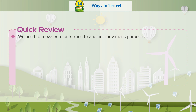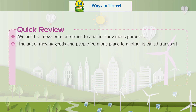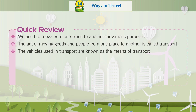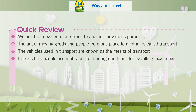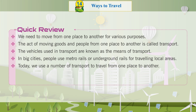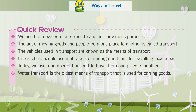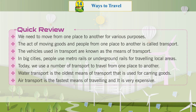Quick Review: We need to move from one place to another for various purposes. The act of moving goods and people from one place to another is called transport. The vehicles used in transport are known as means of transport. In big cities, people use metro rails or underground rails for travelling local areas. Today, we use a number of transport options to travel. Water transport is the oldest means of transport used for carrying goods. Air transport is the fastest means of travelling and it is very expensive.